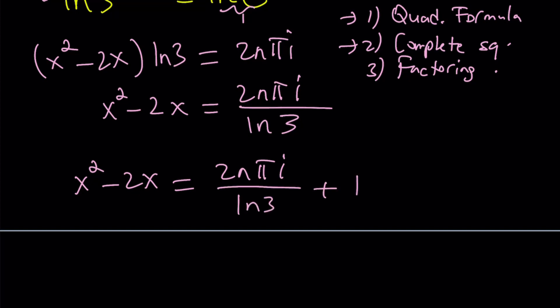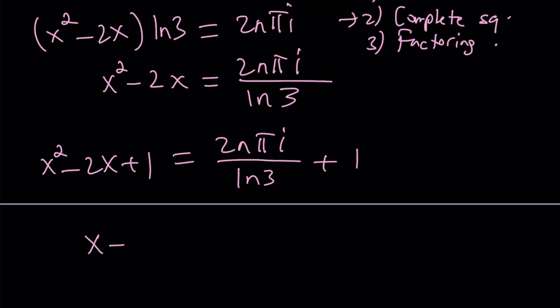When you add 1 to both sides, the left-hand side is basically going to be a perfect square. It is going to be x minus 1 squared. So let's go ahead and write it that way. And on the right-hand side, what I can do is make a common denominator. To make a common denominator, I need to write 1 as ln3 over ln3. And then just add the numerators. So we're going to get ln3 plus 2n pi i over ln3. Notice that I wrote the one first. It doesn't matter because we can switch these around.